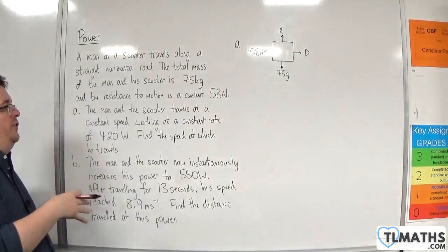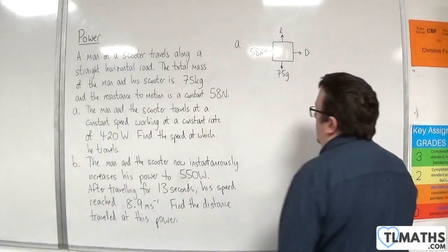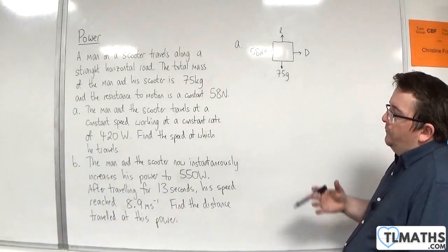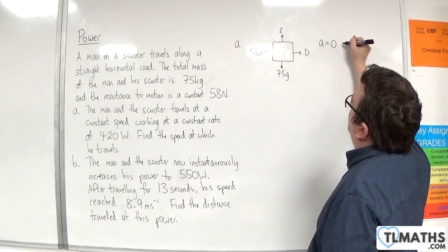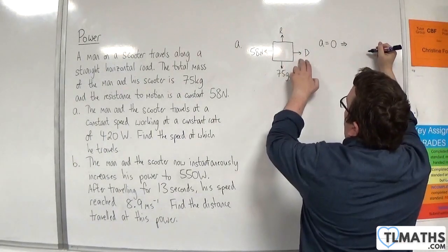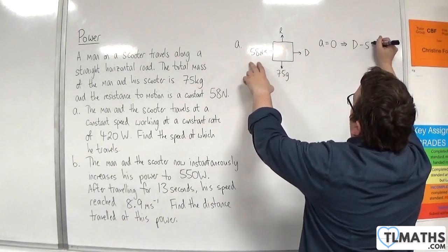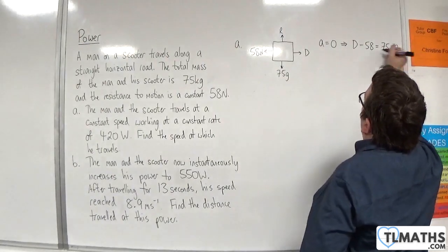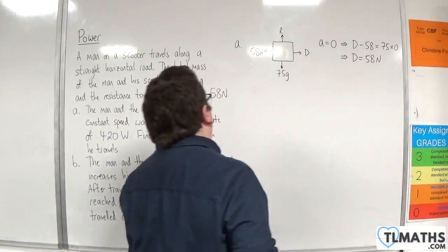For part A, you could use SUVAT, but I'm not going to. I think it would probably bring on bad habits here. So what are we going to do? Well, we know that A is zero because of the constant speed. That means that the driving force, take away 58, must be equal to the mass times the acceleration. So the driving force has to be 58 newtons.